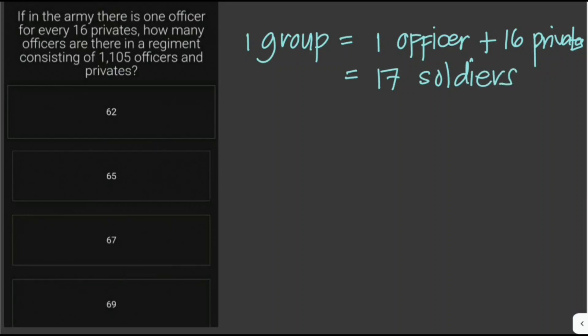So there are 17 people or soldiers in one group. Since we're given here 1,105 soldiers in a regiment, we can just divide 1,105 by 17, and this gives us 65. So there are 65 groups or squads in this regiment of 1,105 soldiers. Therefore, there are also 65 officers.